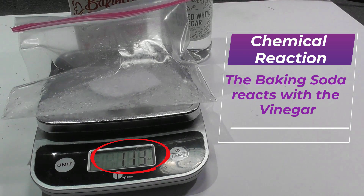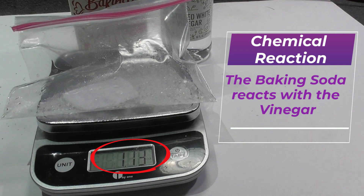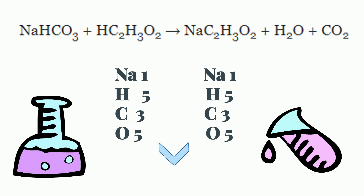The mass of the reactants was not created or destroyed, it was merely rearranged. The balanced equation for this reaction is as follows, and you can see that the elements are balanced on both sides of the equation, but also rearranged.